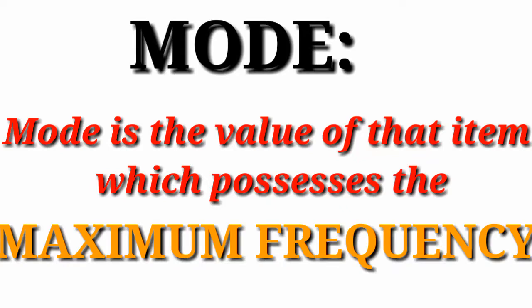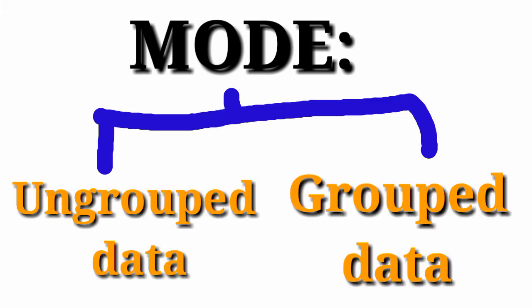Hi guys, welcome to my channel. In this video we are going to see all about mode — its types, formula, and all. Mode is the value of that item which possesses the maximum frequency. Its types are ungrouped data and grouped data.